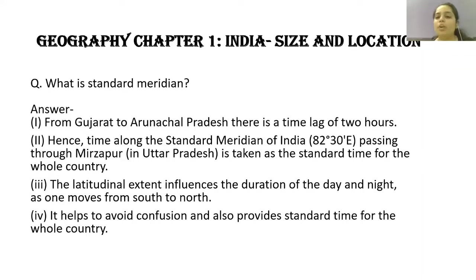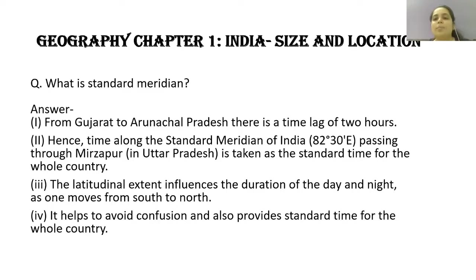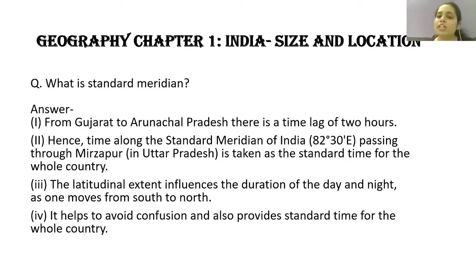The Standard Meridian is at 82 degrees 30 minutes East — this is its longitude location, as it is a standing vertical line. The longitude divides the world into east and west. India is in the east, so the Standard Meridian of India is 82 degrees 30 minutes East, passing through Mirzapur, Uttar Pradesh.